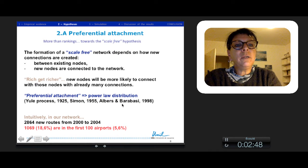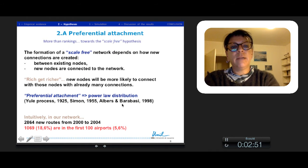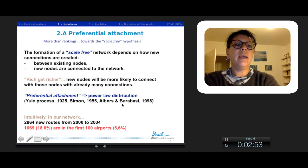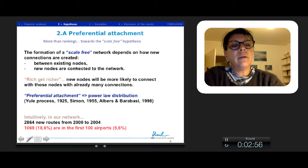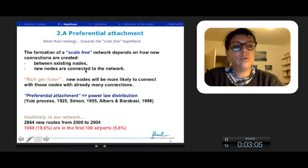For the preferential attachment, we take the scale-free hypothesis. Between existing nodes, new nodes are connected to the network, especially to the strongest nodes. Rich get richer and new nodes will likely connect with nodes with already many connections. This preferential attachment creates the power-law distribution with the Yule process, Simon, Albert and Barabási.